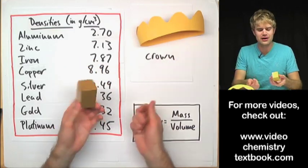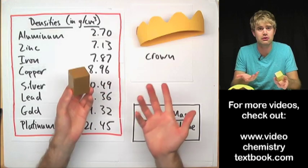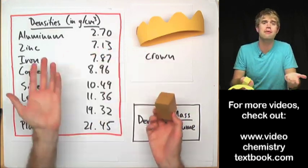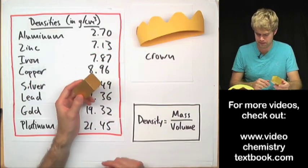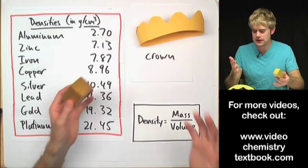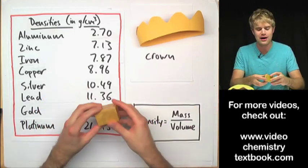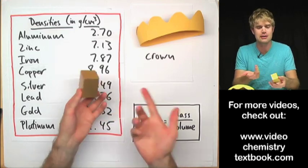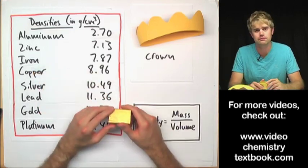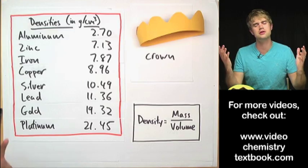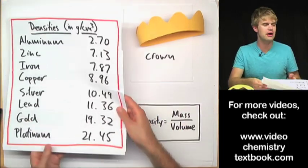But the crown, it has a shape that you can't easily just do math to figure out what the volume is. And he can't melt it down because then that would destroy the crown. So he keeps thinking and thinking and thinking, how can I get the volume for the crown when I can't reshape it into an easy shape where I can just do math to figure out the volume? He thinks and thinks and thinks and he's just about to give up.